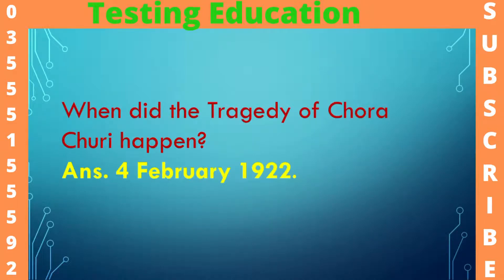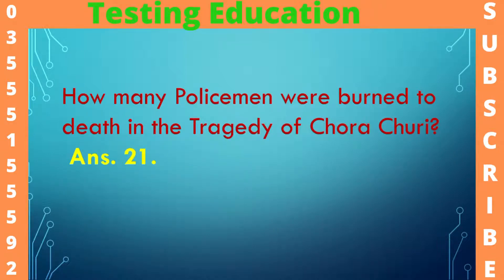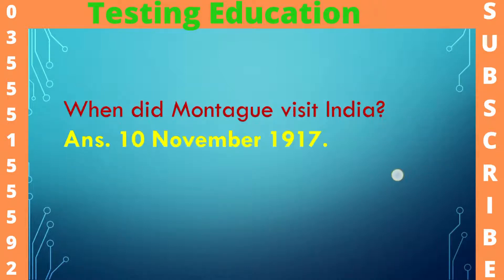When did the tragedy of Chauri Chaura happen? 4 February 1922. How many policemen were burned to death in the tragedy of Chauri Chaura? 21.